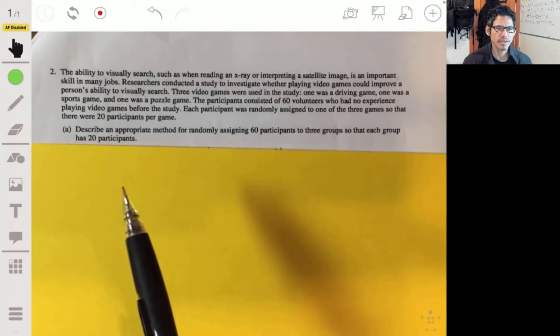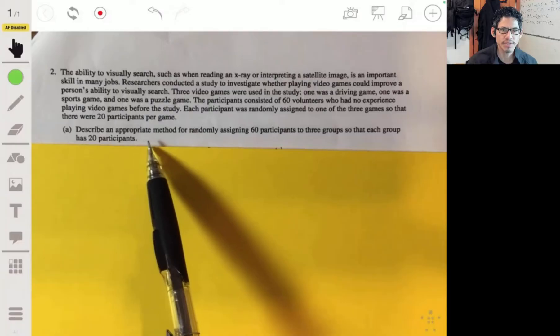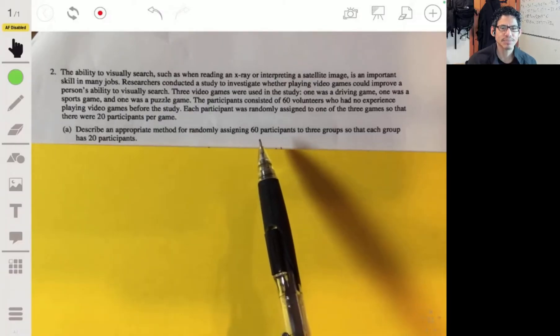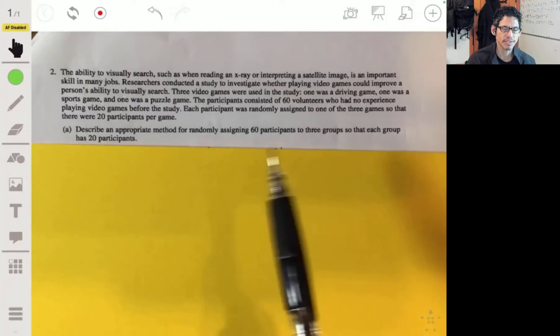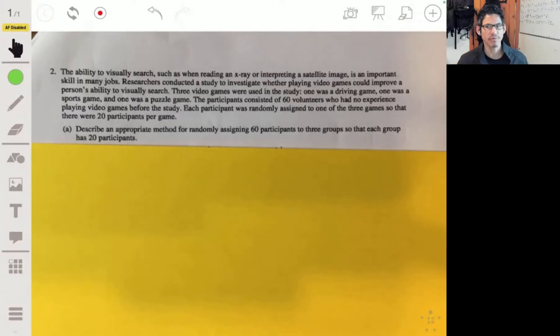Part A is saying to describe an appropriate method for randomly assigning 60 participants to three groups so that each group has 20 participants. This is just making sure you understand the basic idea behind random sampling. The thing is, since you have 60 people, you want to make sure you guarantee that you get 20 in each one. You want to be a little clever, but it's really not too much more than using a random number generator, which is essentially what I put.